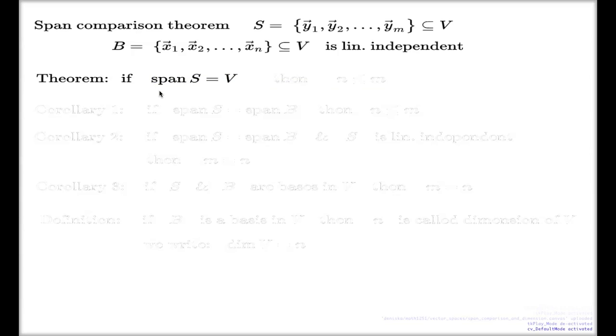So if the S is spanning, you can read this by saying S is spanning, then the theorem itself concludes that the number of vectors in B will never exceed the number of vectors in S.